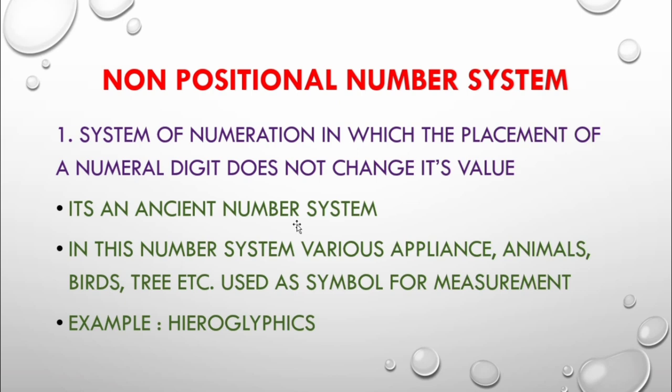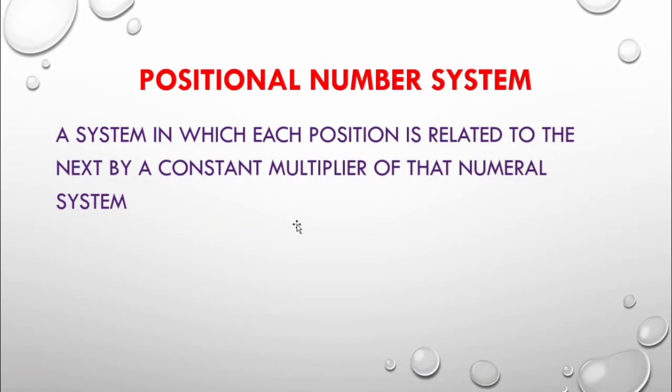Second part is positional number system. A system in which each position is related to the next by constant multiplier of that numeral system. That means a constant multiplier like ones, tens, thousands, lakhs. What I mentioned earlier, a constant multiplier of numeral system.